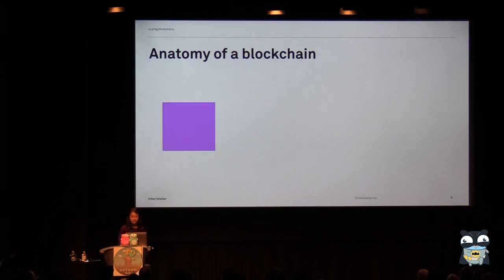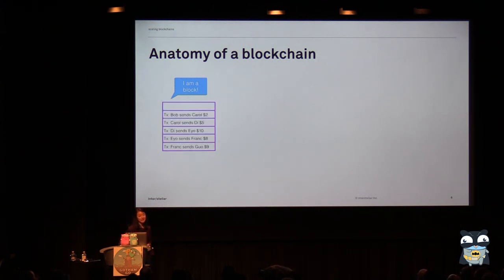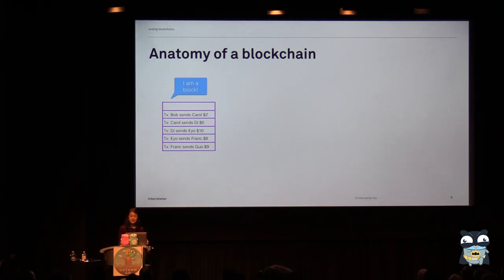A blockchain is consisted of blocks. And as you might think, a blockchain is actually a chain of blocks. Inside of these blocks are transactions. Different platforms will represent these differently, but fundamentally you have some sort of list of different entities sending value in between each other.